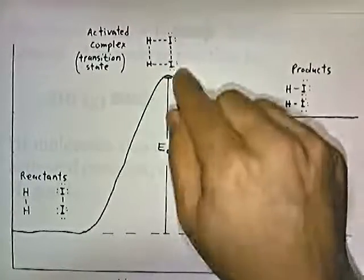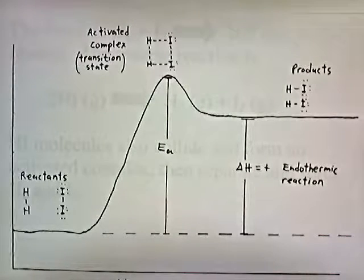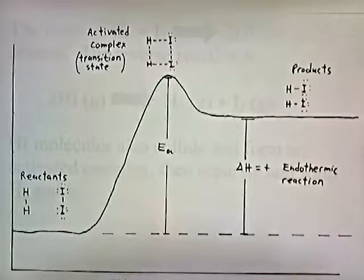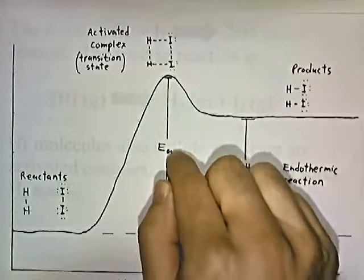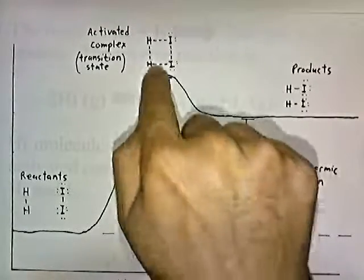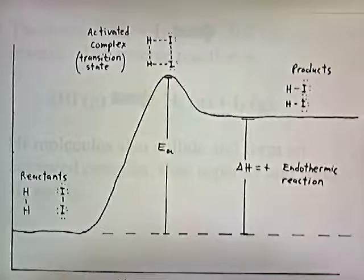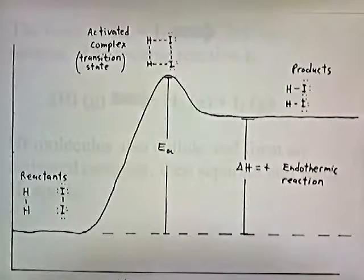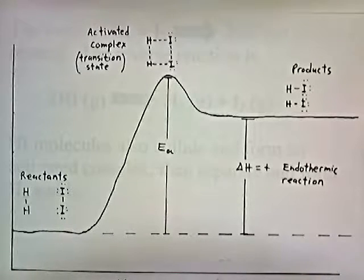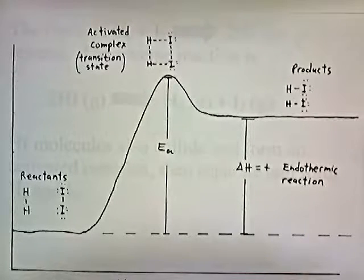E sub A is the activation energy — the energy required to push the reactants close enough together and with enough speed so that the activated complex can be formed. It's the energy needed to get them close together and to smack into each other hard enough to make the bonds break. Delta H is the heat or enthalpy of the reaction — the energy that's absorbed or released. In this graph, the energy absorbed is greater than the energy released, so it's an endothermic reaction and delta H has a positive value.